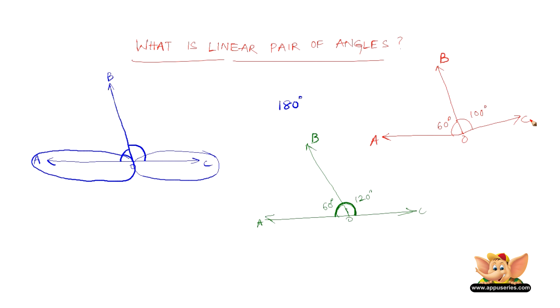Now the angles AOB and BOC cannot be called as linear pair of angles. Because their uncommon arms, that is AO and OC, do not form an angle of 180 degrees. They only form an angle of 160 degrees.